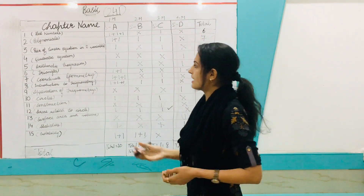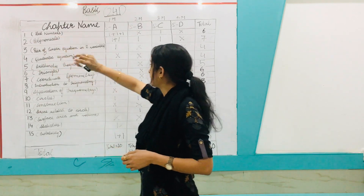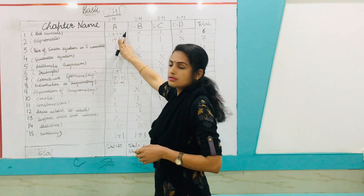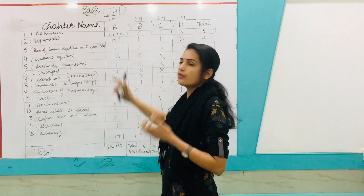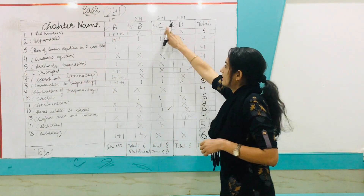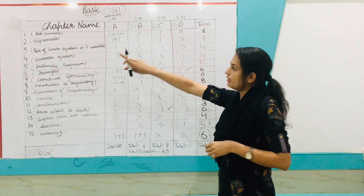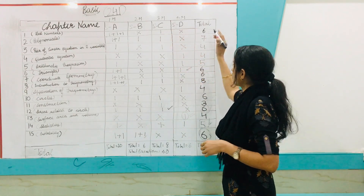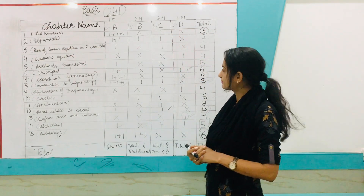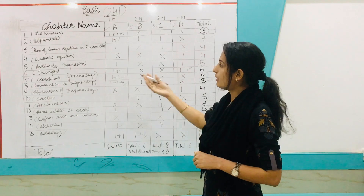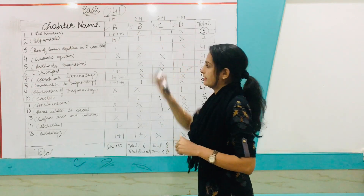Starting with Chapter 1, Real Numbers — there will be three questions of one mark each, and one question of three marks. So the chapter total is six marks. You have to prepare this chapter according to this pattern.